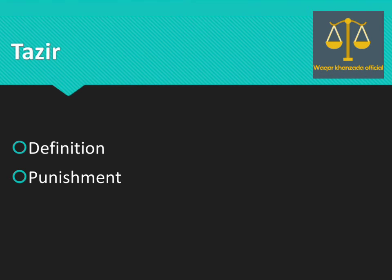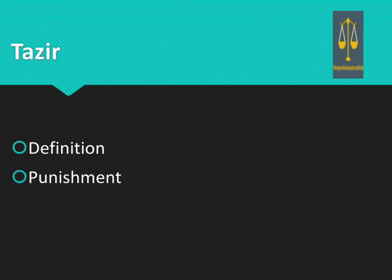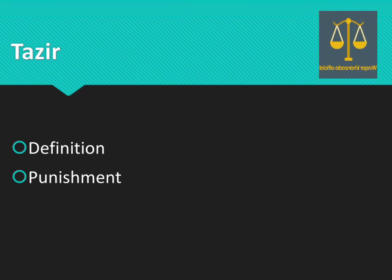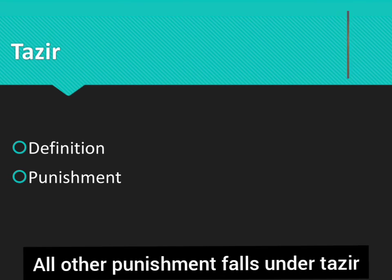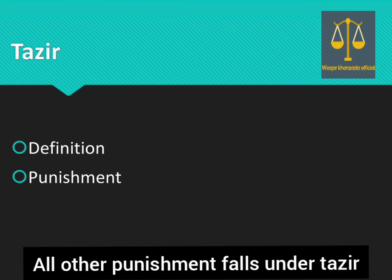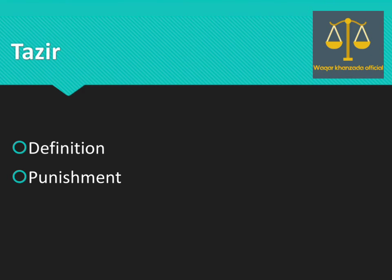Ta'zir means punishment other than Kisaas, Diyat, Arsh, and Daman. These four are distinct punishments, and any remaining punishment from the ten kinds falls under the category of Ta'zir.